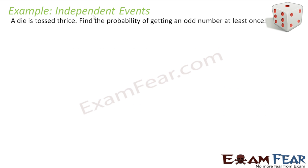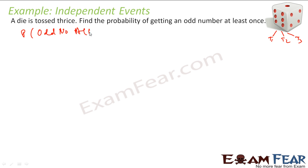A dice is tossed thrice. Find the probability of getting an odd number at least once. The dice is thrown once, twice, and thrice. We have to find the probability of getting an odd number at least once — that is, odd number zero times, one time, two times, or three times.